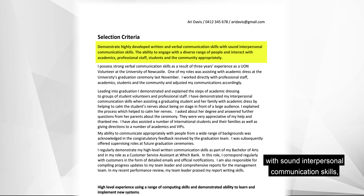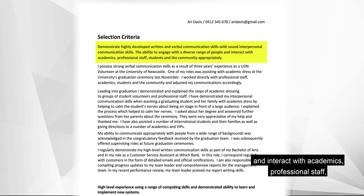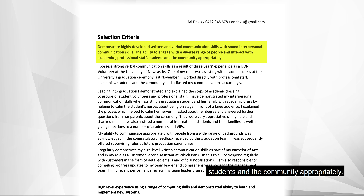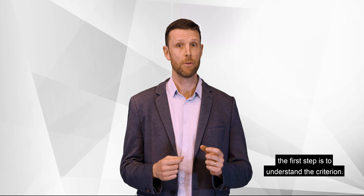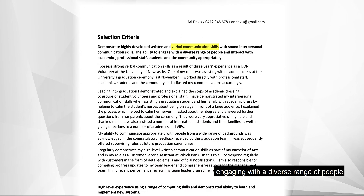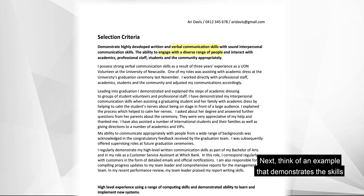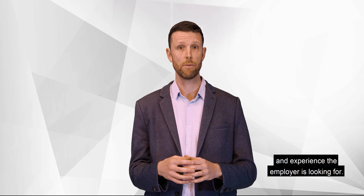Criterion one: demonstrate highly developed written and verbal communication skills with sound interpersonal communication skills, the ability to engage with a diverse range of people and interact with academics, professional staff, students and the community appropriately. When addressing criteria, the first step is to understand the criterion. The key elements are communication and engaging with a diverse range of people in academia and the community.